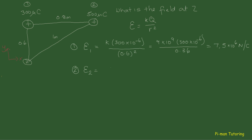Now we move on to E2: same equation, different charge — this time 500 times 10 to the minus 6 coulombs — and the distance we're using is the full distance between charge number two and the point we're concerned about, which is 1 meter. That gives us 9 times 10 to the 9 times 500 times 10 to the minus 6, which is 4.5 times 10 to the 6 newtons per coulomb.